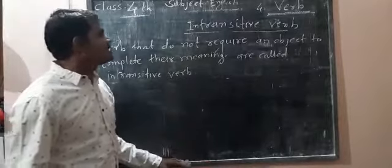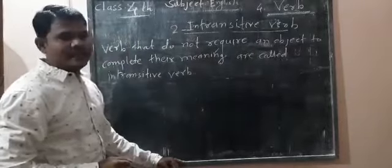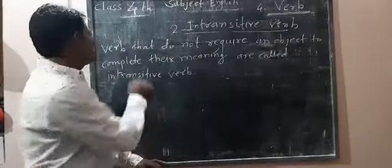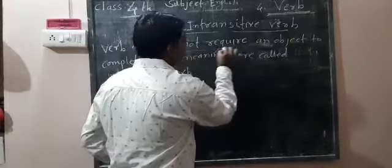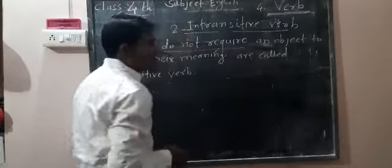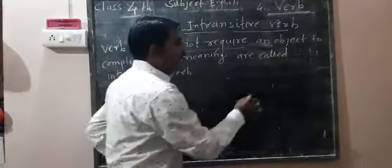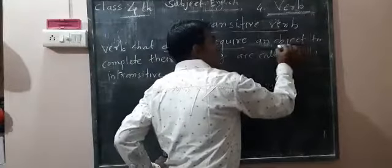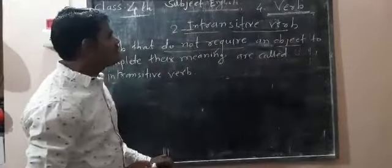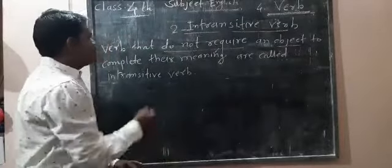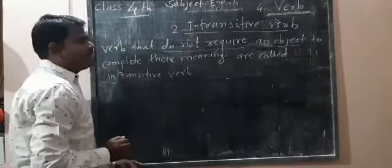This is the 2nd type of verb. Intransitive verb means a verb that does not require — does not need an object to complete its meaning. An object is not important in an intransitive verb; the verb does not need any object.